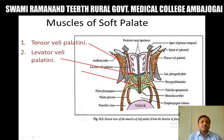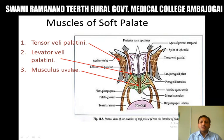The next muscle is the musculus uvulae. These are paired strips of muscles. The origin is from the posterior nasal spine, and they are inserted into the mucosa of the uvula. The action of this muscle is to elevate or raise the uvula.